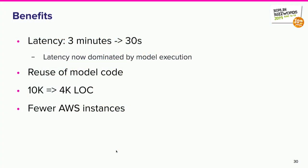With that, they managed to get latency reduction. The interesting part about the latency is it still looks high — 30 seconds — but it's mostly bounded by the model execution now, not by the system around it, not by the cron schedule or the streaming. That means the model execution is what would need to be worked on to get latency further down, but it's possible. The model code could be reused with no changes, lines of code were reduced because we got rid of all the boilerplate code just to stitch multiple jobs together, and there was also a reduction in the AWS instances needed.